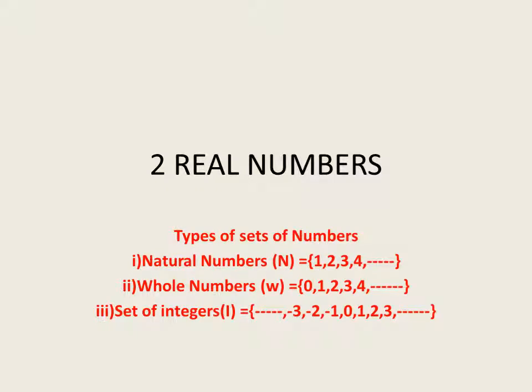Hello students, good evening. Today we are starting our algebra second lesson: real numbers. Last year you studied some sets and types of numbers. The first is the natural number set, denoted by the letter N, written as 1, 2, 3, 4 up to infinity. The second set is whole numbers, denoted by W, written as 0, 1, 2, 3, 4 up to infinity — from natural numbers, one more number is added, which is 0. Natural numbers start from 1; whole numbers start from 0.